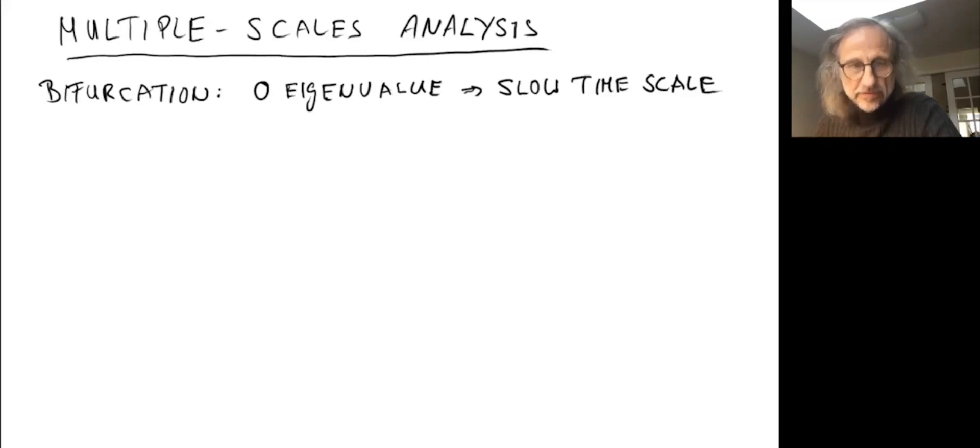A characteristic feature of the bifurcation is that there's a zero eigenvalue, which means there is some direction in the phase plane or phase space associated with a very slow timescale. That implies some timescale separation, and we should be able to use multiple timescales as an approach to solve the equations.